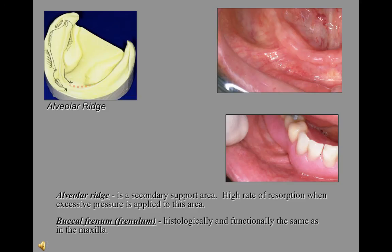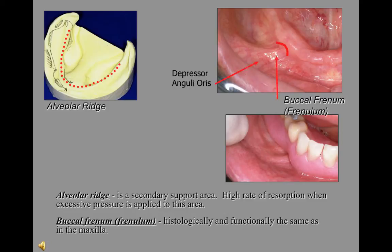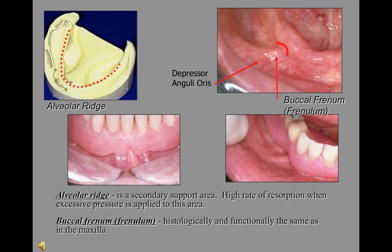The alveolar ridge is a secondary support area — remember that there's a high rate of resorption when excessive pressure is applied. Note the medium attachment on this buccal frenum. This buccal frenum has a higher attachment than on the previous slide. The denture has to be relieved more aggressively to keep this muscle in function from lifting the denture.